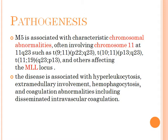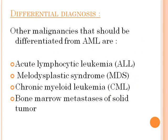In terms of pathogenesis, M5 is associated with characteristic chromosomal abnormalities often involving chromosome 11. The disease is associated with hyperleukocytosis, extramedullary involvement, hemophagocytosis, and coagulation abnormalities including disseminated intravascular coagulation.